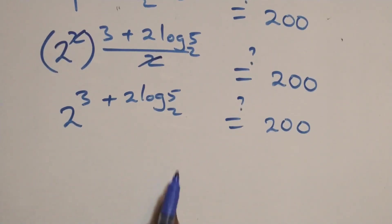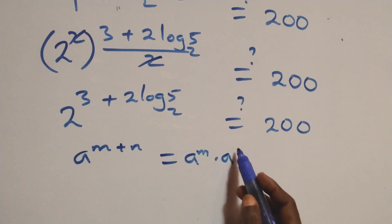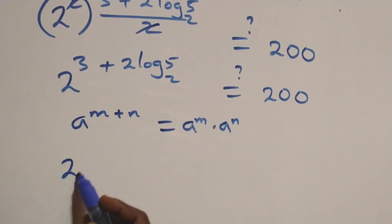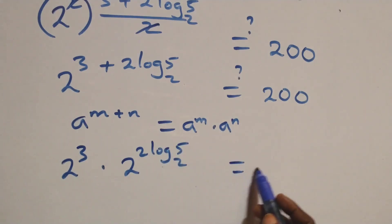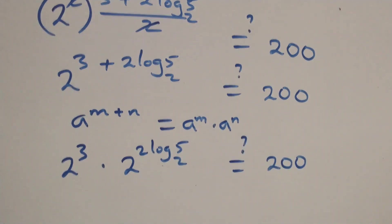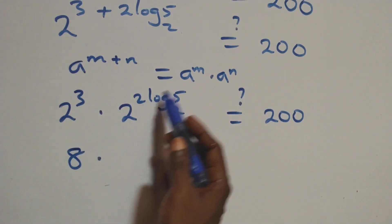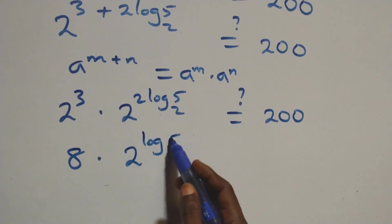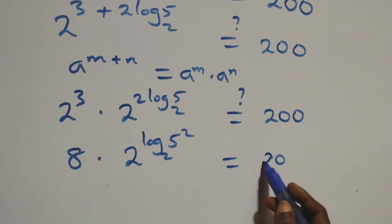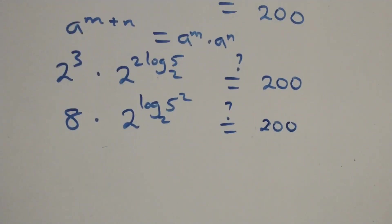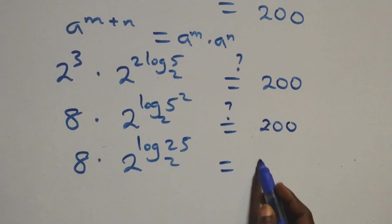Applying the law of indices, a raised to power (m + n) equals a^m times a^n. So we have 2 raised to power 3 times 2 raised to power 2 log 5 times 2 raised to power −2 equals 200. This gives 8 times 2 raised to power log 5 squared, which equals 8 times 25 equals 200, using the rule that a raised to power log base a of b equals b.